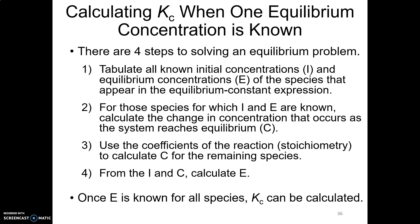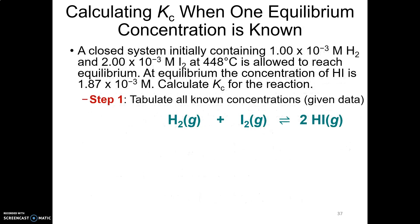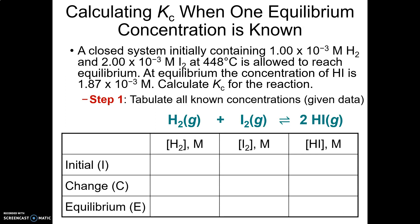The easiest way to teach this is to show you one. So here's our example: a closed system initially containing 1×10⁻³ M hydrogen and 2×10⁻³ M iodine at 448°C is allowed to reach equilibrium. At equilibrium, the concentration of HI is 1.87×10⁻³ M. Calculate KC for the reaction: H₂ + I₂ → 2HI. The first thing you do is set up your ICE table — write I-C-E to the left and track each column under each substance.